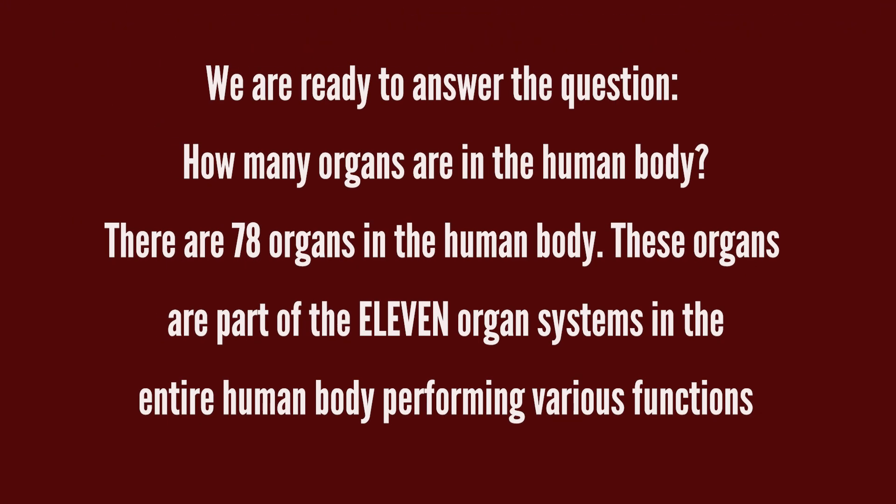How many organs are in the human body? There are 78 organs in the human body. These organs are part of the 11 organ systems in the entire human body, performing various functions.